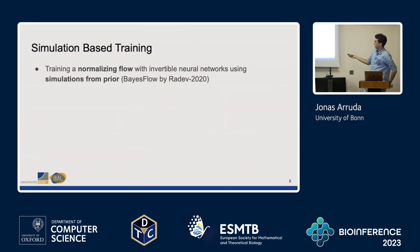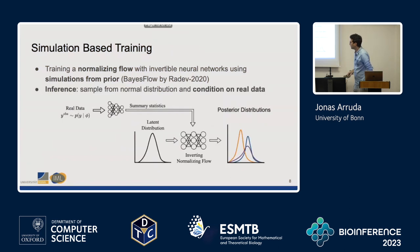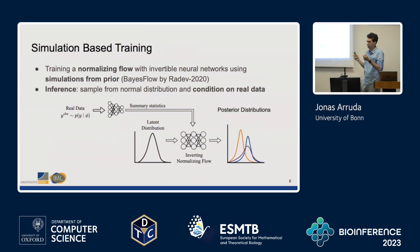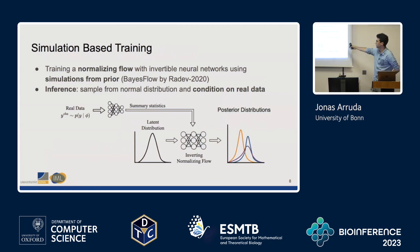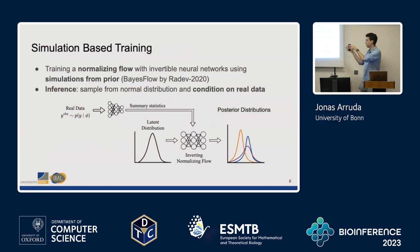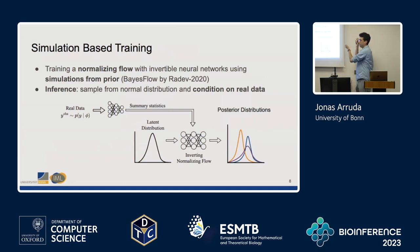Then we go to real data in a second step by switching the direction of the normalizing flow. Now we start with the normal distribution and take the inverse — because of how we parameterize the normalizing flow, that's really cheap to compute. We get our posterior distributions by conditioning on real data, using the same trained summary network, and we get posterior distributions for our real data.